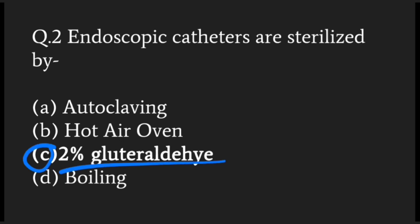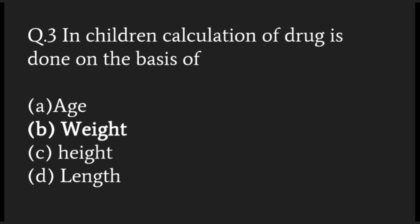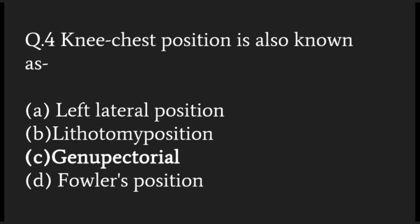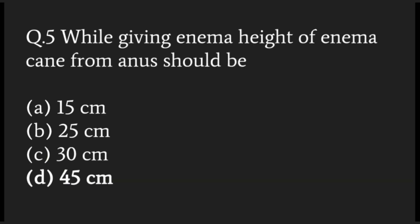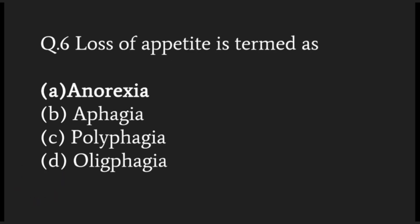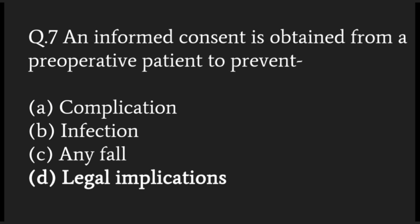In children, calculation of drug dosage is done on the basis of weight. Nietzsche's position is also known as genopectoral position. While giving an enema, the height of the enema can should be 45 centimeters above the anal level. These days we use disposable enema kits. Loss of appetite is termed as anorexia.